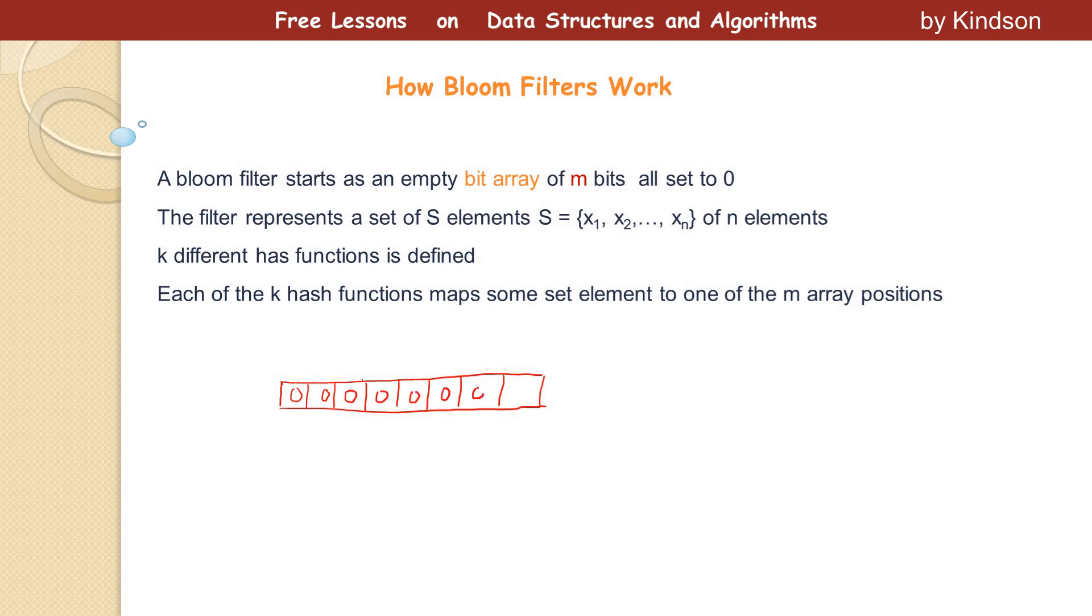So initially in a Bloom Filter, this is what we have. I want to explain it in such a way that you could explain it in your own words. So this is Bloom Filter. Initially, this is how it is. And then this goes from how many bits? M bits. So they start from, let's say if we start from zero, one, all the way to M minus one. So it means that the total number of bits is M minus one.